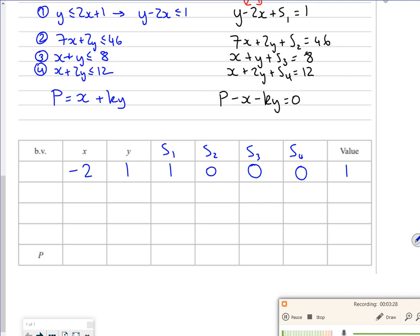So because I've set up the s1, I'm going to call that s1 because I've added that slack variable. So same for the next one. So that's going to be 7, 2, 0, 1, 0, 0, 46, and then s2 because that's the one I'm in. Then for my s3 it's 1, 1, 0, 0, 1, 0, 8.